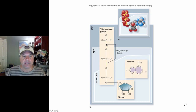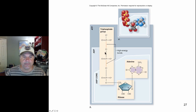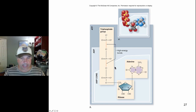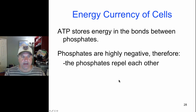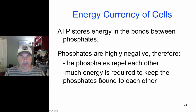If we cleave off 1 phosphate we're left with ADP, adenosine diphosphate, and if we cleave off 2 phosphates we're left with AMP, adenosine monophosphate. This can provide energy to drive biochemical reactions — that's why ATP is the energy currency molecule of the cell.